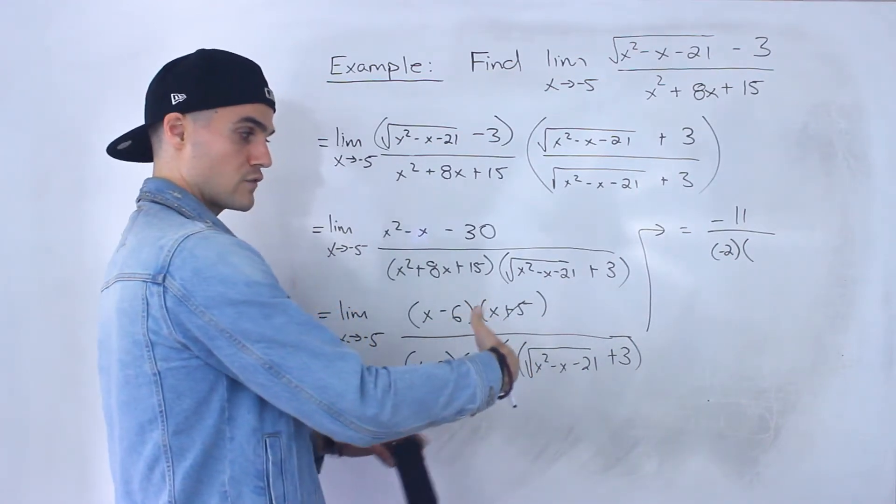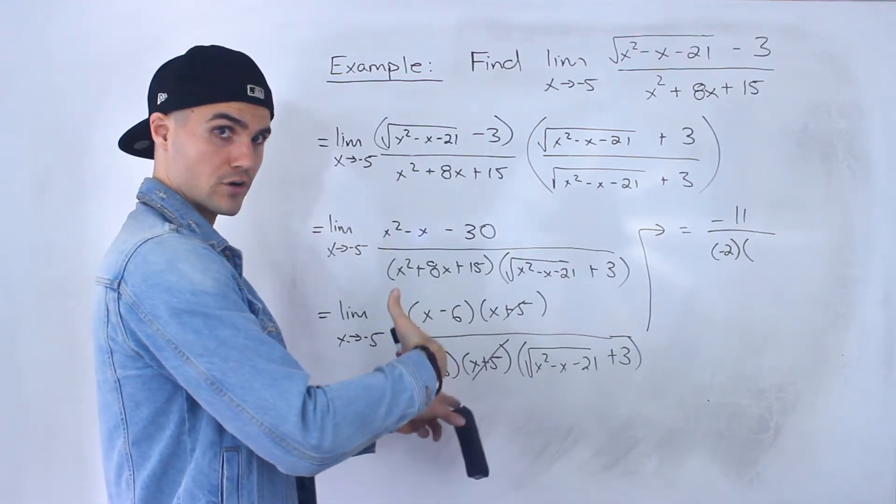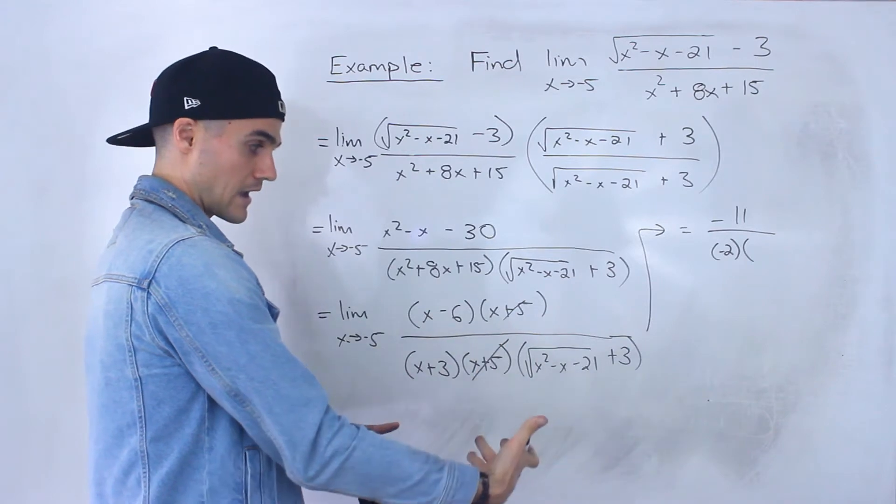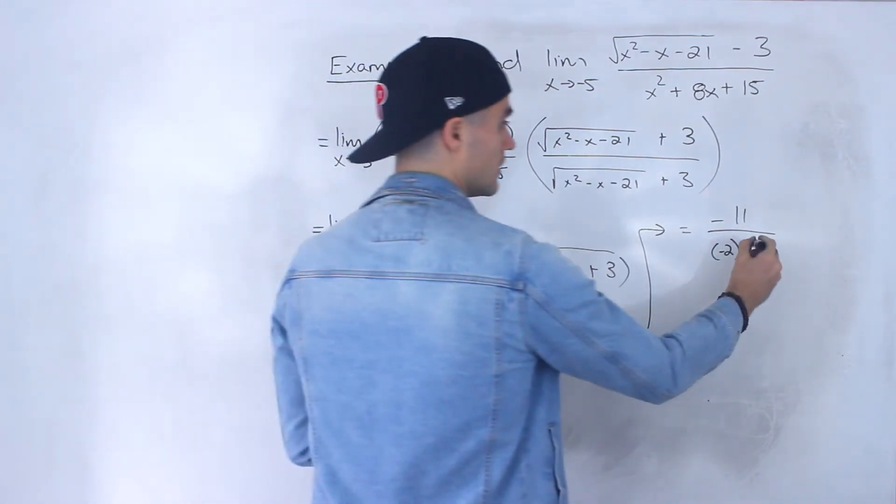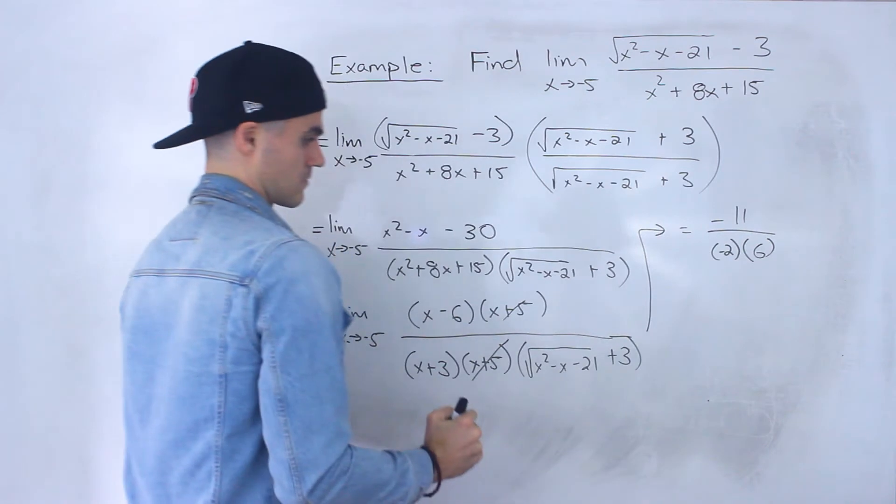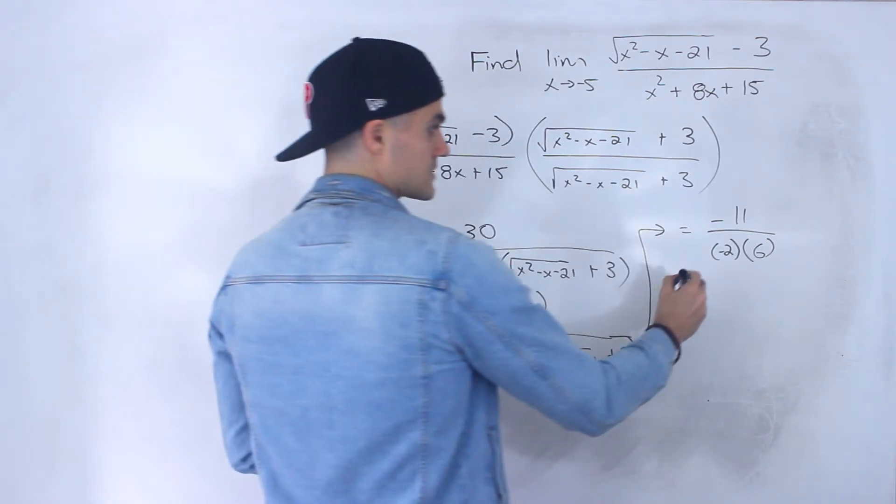And then this would be negative 5 squared is 25, minus negative 5 is 30, minus 21 is 9, square root of 9 is 3, plus 3 is 6.